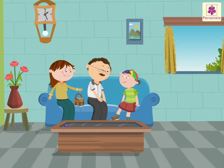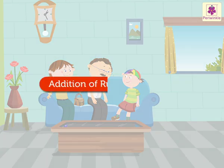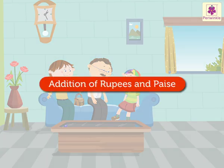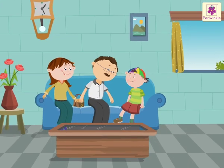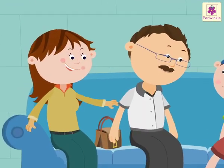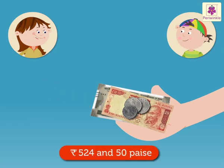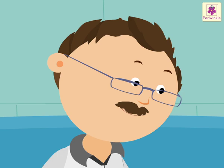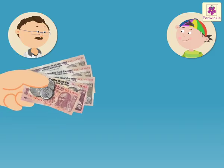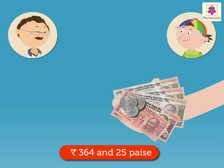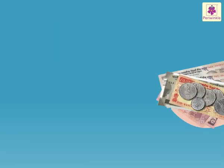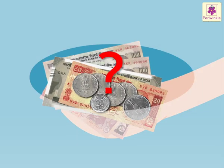Today, let us learn about addition of rupees and paise with Andy's family. Andy's mother gave him 524 rupees and 50 paise, and his father gave him 364 rupees and 25 paise. How much money does he have in all now?